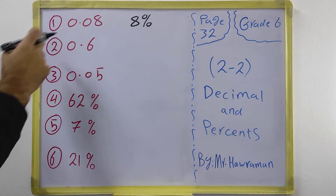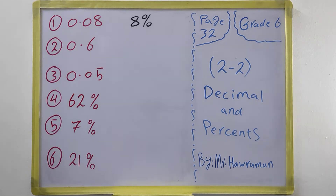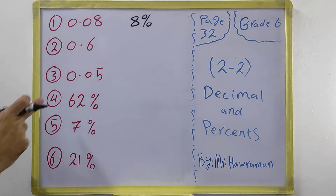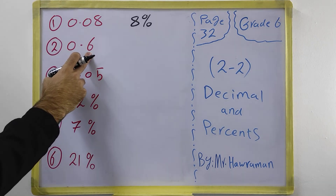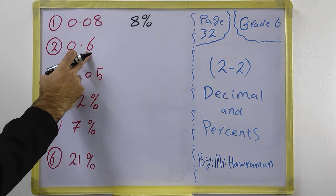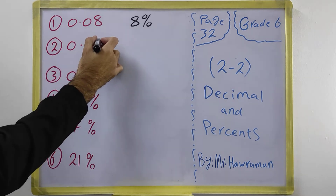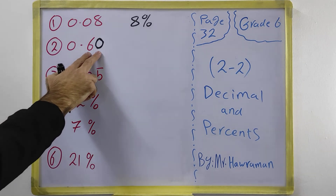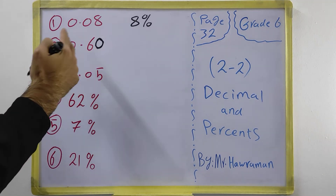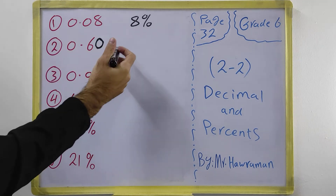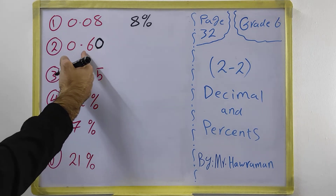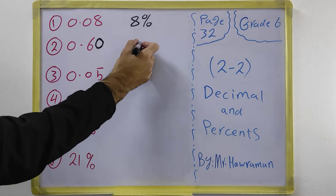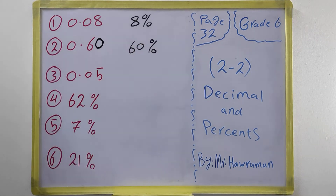The next example: 0.6. How do we change this into percent? After the point there is just one digit, but we always need two digits. So we make it two digits: 0.60. Now after the point we have 60, so this number is 60 percent.